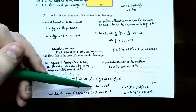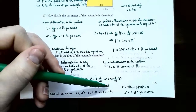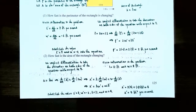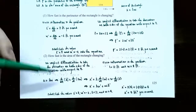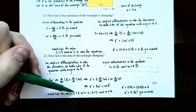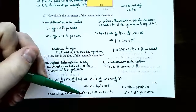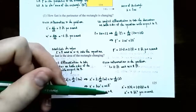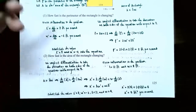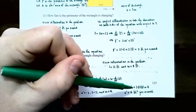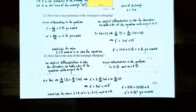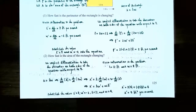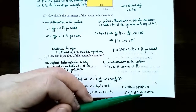To find how fast the area changes, we need L, W, W prime, and L prime. Substituting L prime equals 3, W prime equals negative 2, L equals 12, and W equals 8: A prime equals 12 times negative 2 plus 8 times 3, wait — it's L times W prime plus W times L prime, so A prime equals 12 times negative 2 plus 8 times 3, which gives 0. So A prime is 0 feet squared per second — the area is not changing at all.